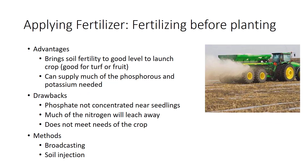Fertilizing before planting brings soil fertility to a good level to launch the crop and can supply much of the phosphorus and potash for the season. Pre-plant fertilization is particularly important for perennial crops such as turf or fruit to supply phosphorus and potash that will be less effectively added later. Common methods include broadcasting and injection. While this is the main fertilization for most crops, there are three drawbacks: phosphate is not concentrated near young seedlings, phosphates do not move much in the soil, and young seedlings are limited in their ability to forage for nutrients. Cold spring soils make uptake even more difficult. In coarse, low CEC soils, much of the nitrogen applied in a pre-plant feeding will leach away before plants can use it.